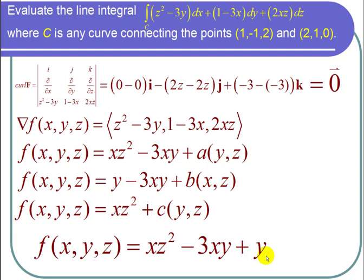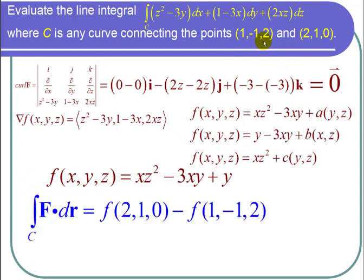So now I can use the fundamental theorem of line integrals which says that when I have a line integral over a curve of f dot dr where f is a conservative vector field and I know the potential function little f, then that line integral is equal to f of the final point minus f of the initial point.